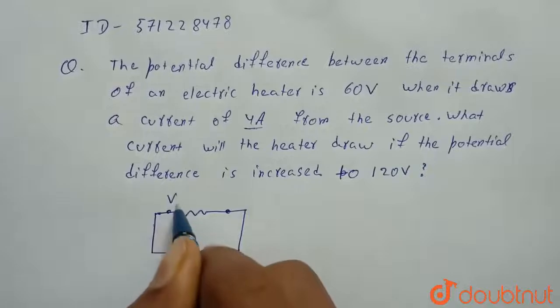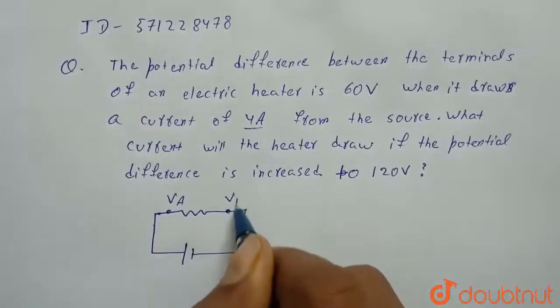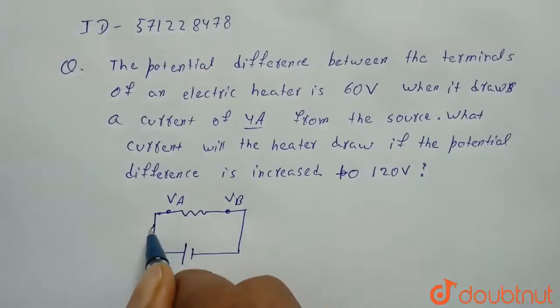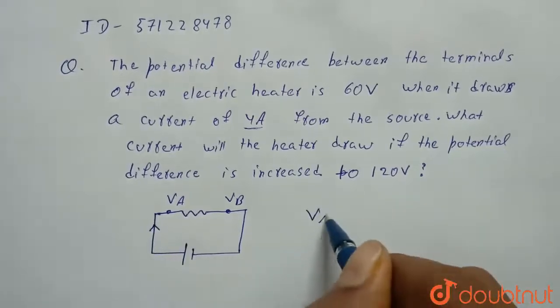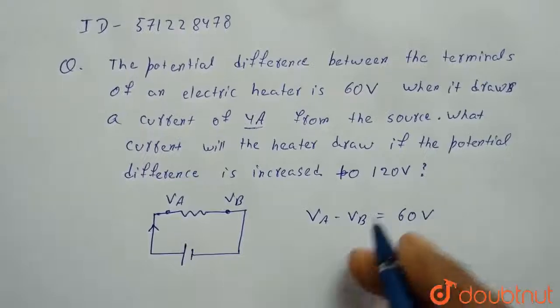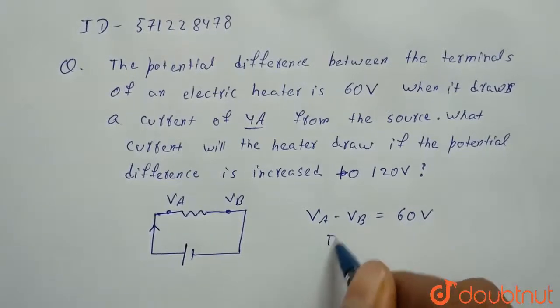let's say this is VA and this is VB across the heater. And when VA minus VB is 60 volts, then current is 4 amperes.